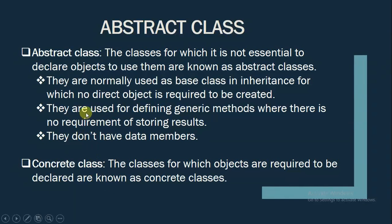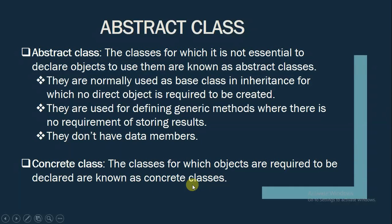Let us understand two more concepts: abstract class and concrete class. Abstract classes are classes for which it is not essential to declare objects to use them. They are normally used as base classes in inheritance for which no direct object is required to be created. They are used for defining generic methods where there is no requirement of storing results, and they don't have data members. Concrete classes are the classes for which objects are required to be declared. That's all for this session. Thank you.